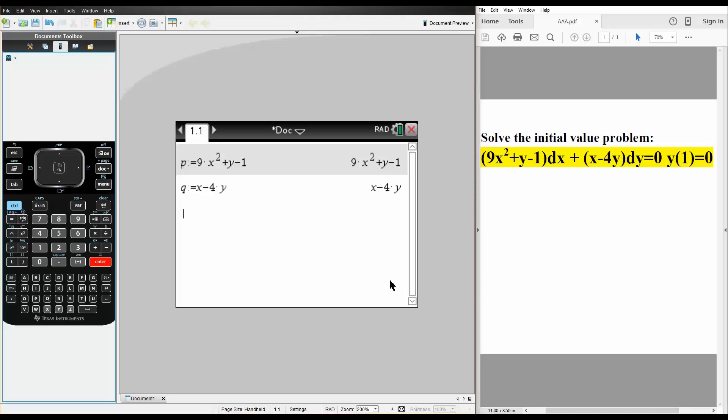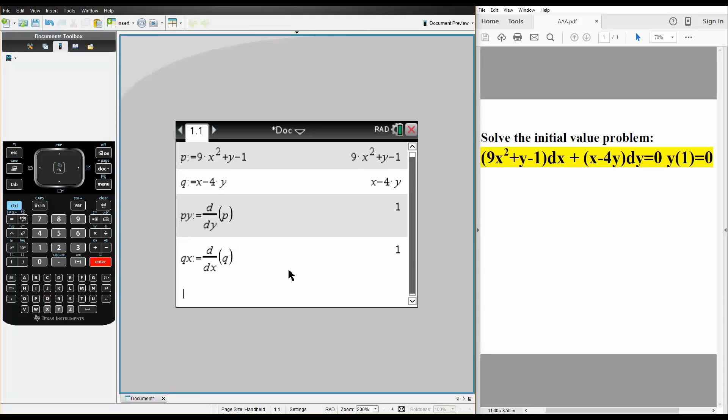Hit enter. And now we take the partial derivative of this in terms of y, partial derivative of this in terms of x. So, we can say Py is defined as, we do a shift minus. We will say dy for P, and we get 1. And now we do Qx. So, Qx is defined as, shift minus, derivative in terms of x for Q. And it also equals 1.